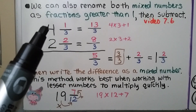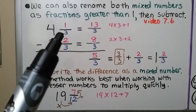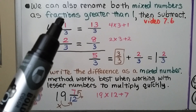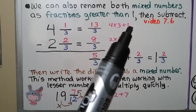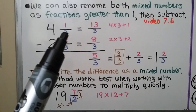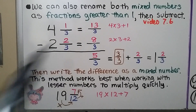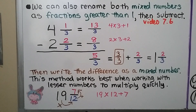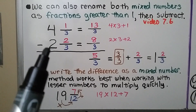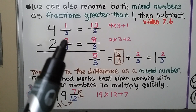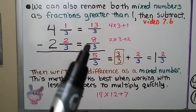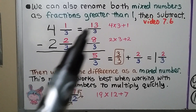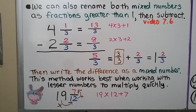We multiply the whole number 4 times the denominator 3 and add the numerator. We do 4 times 3 is 12, plus 1 is 13. We put it over that same denominator: we have 13 thirds. We do the same thing for the subtrahend: 2 times 3 is 6, plus 2 is 8. We put it over the denominator: we have 8 thirds. Now we can subtract 13 thirds minus 8 thirds and get 5 thirds.